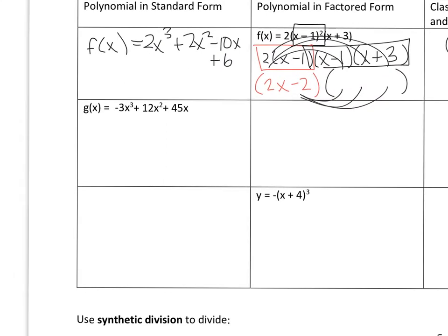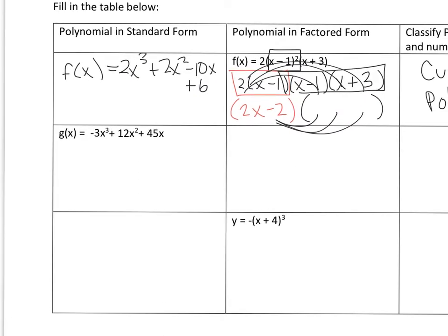You'll also need to be able to write a polynomial in factored form, and what you're going to have to do is factor it. I want to change the constant to a 6 — I changed it on the review to a 6. So we have 6x squared plus 6x squared plus 6.